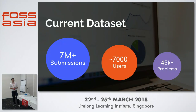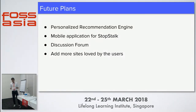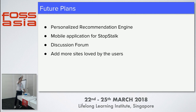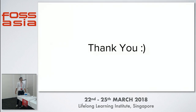The current dataset right now is 7 million plus submissions, increasing every day. Around 7,000 users across the world. The total number of problems we have is 45,000 plus. Future plans would be: we have all the data of the user, so we would track the last submissions and based on that recommend problems to solve, which would be very helpful. Next would be a mobile application, a discussion forum for people, and adding more sites to StopStalk.